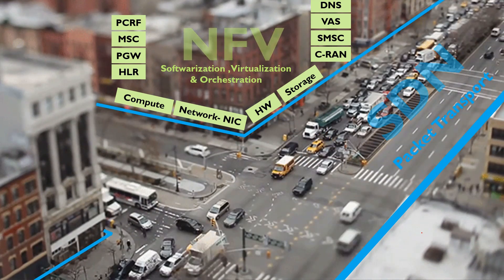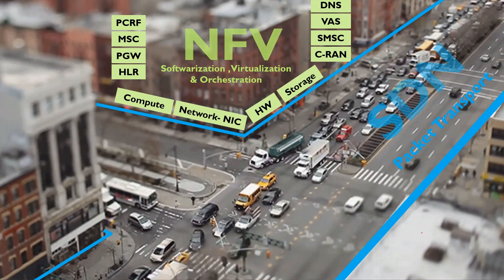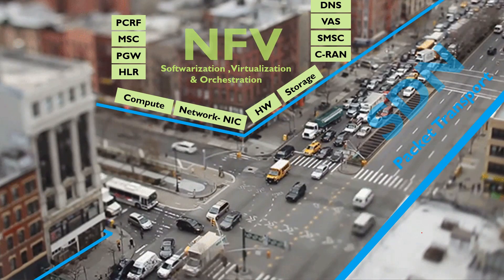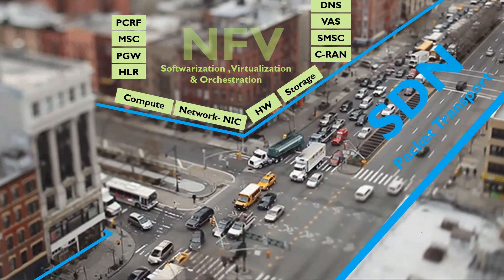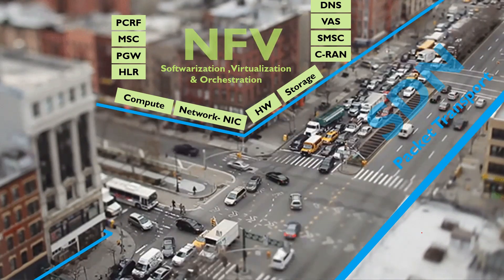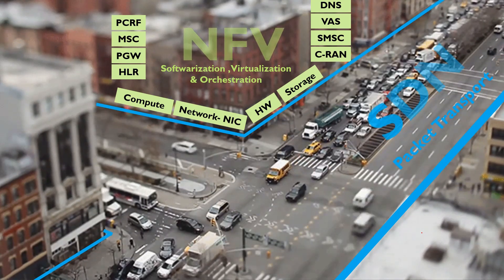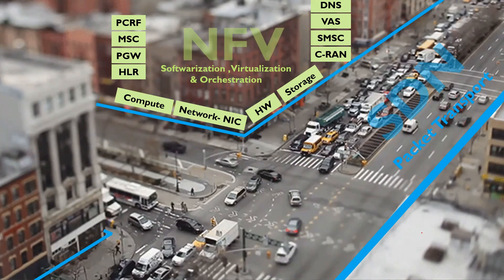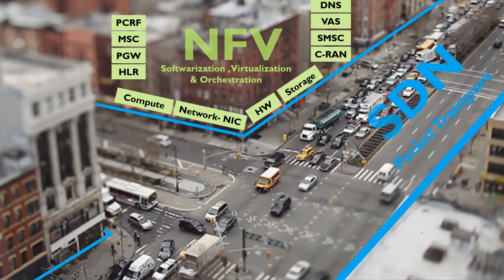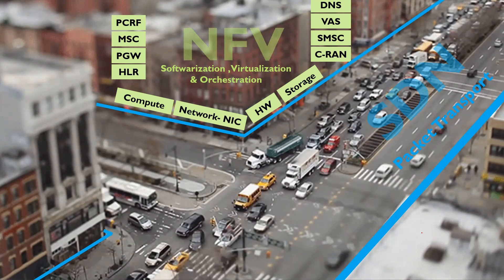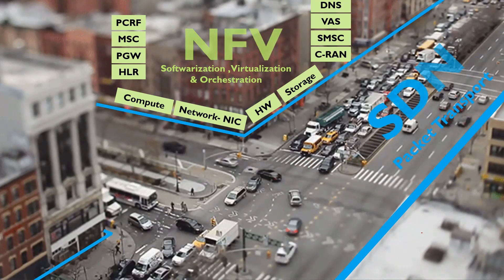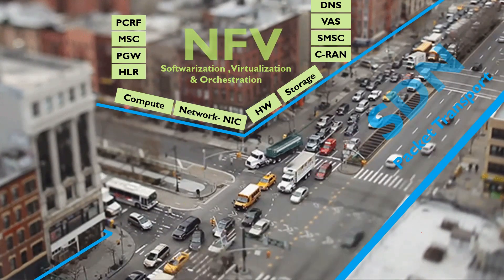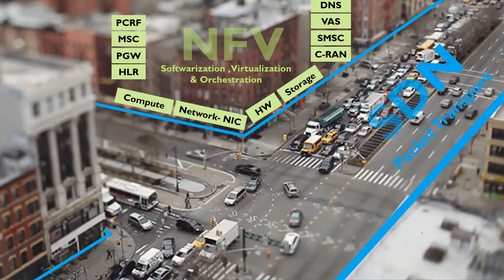With SDN, we are going to ensure that IP and network reachability happens in a timely manner. Both SDN and NFV architectures use network abstraction, but they do it in a totally different way.